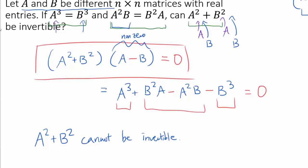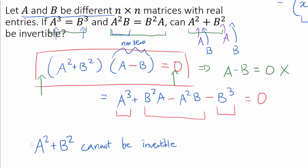Because if A squared plus B squared was invertible, you can multiply by the inverse of A squared plus B squared to left and right side of this equation. And that's going to get us A minus B is equal to zero. And A minus B is equal to zero is obviously a contradiction because A and B are different. So A squared plus B squared cannot be invertible. And we are done with this question as well.